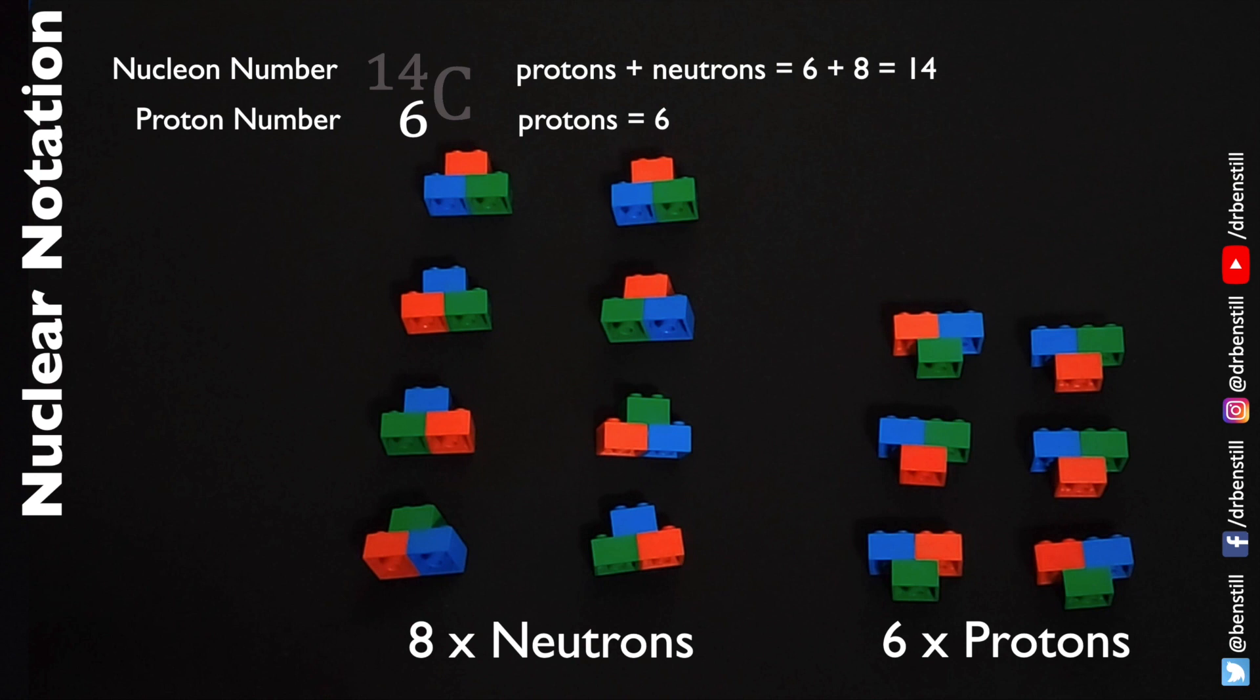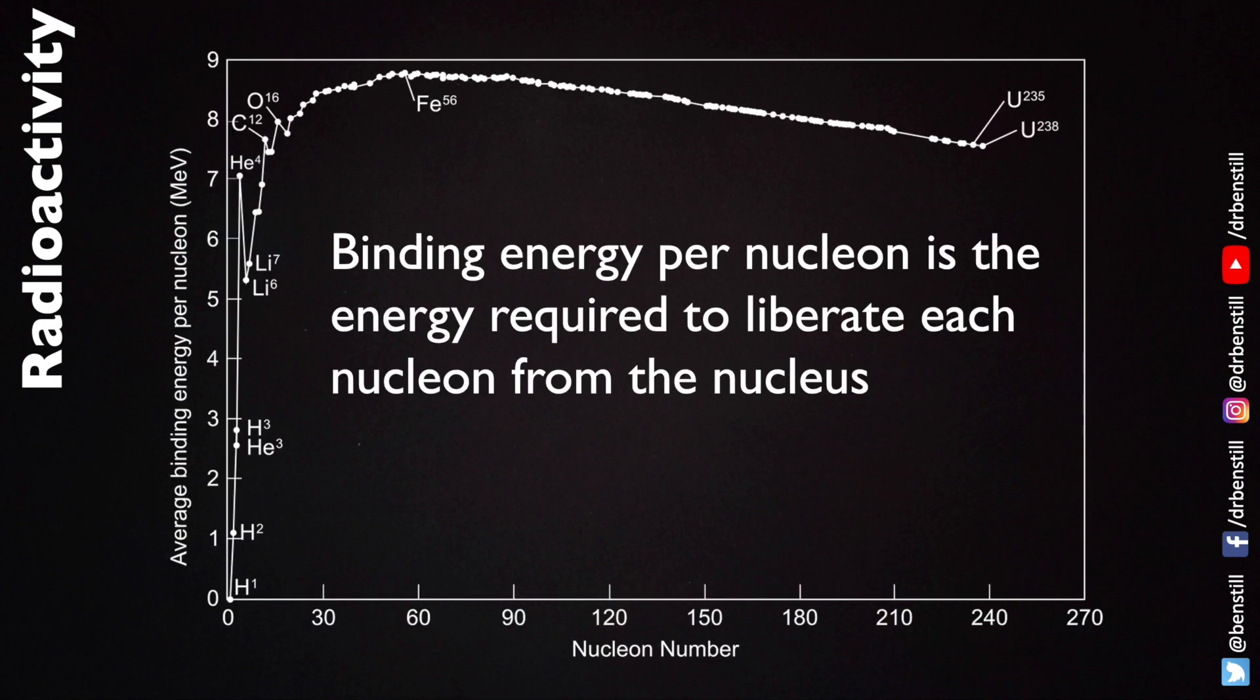Now the energy required to take a nucleus apart like that into its constituent nucleons or neutrons and protons is something that is called the binding energy. So the binding energy per nucleon is different for every single different nucleus, element or isotope. And this is a curve showing the binding energy of the most common isotopes found in nature.